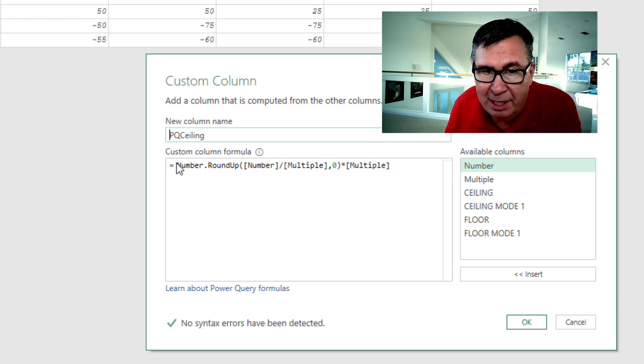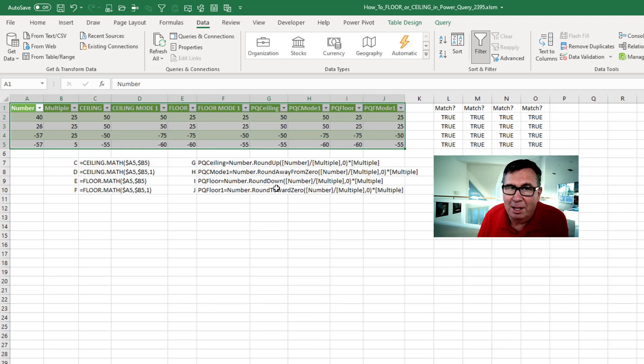You'll give it a name, PQ Ceiling, and then equal number dot roundup and reusing the number and the multiple. There you have kind of the Rosetta Stone of these various functions in Excel and how to do the same thing in Power Query.